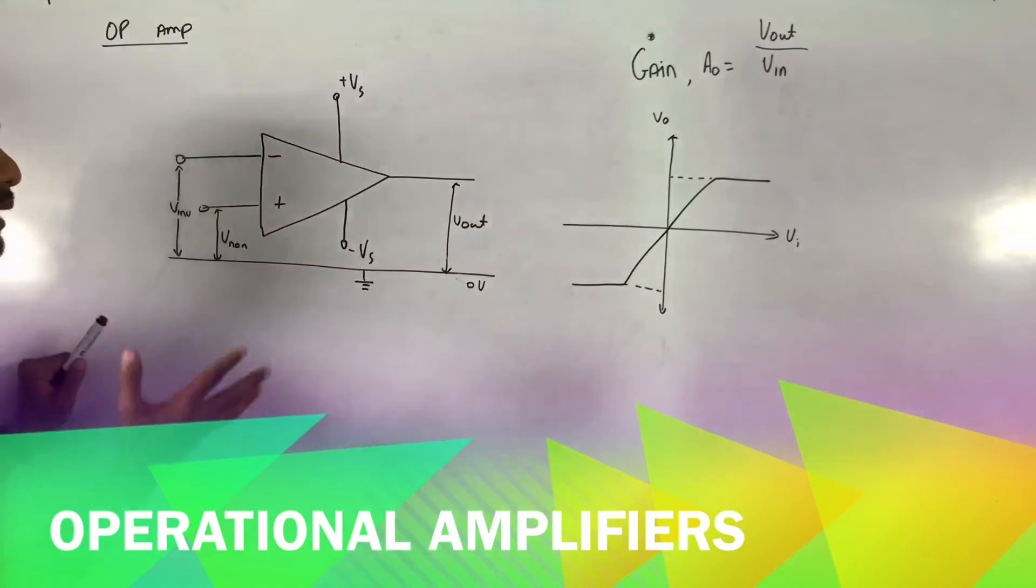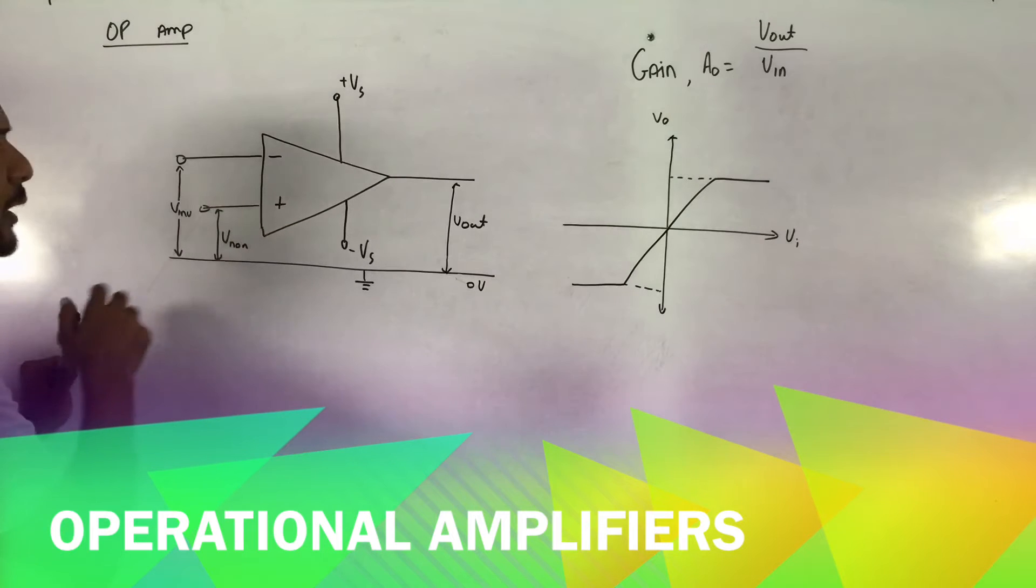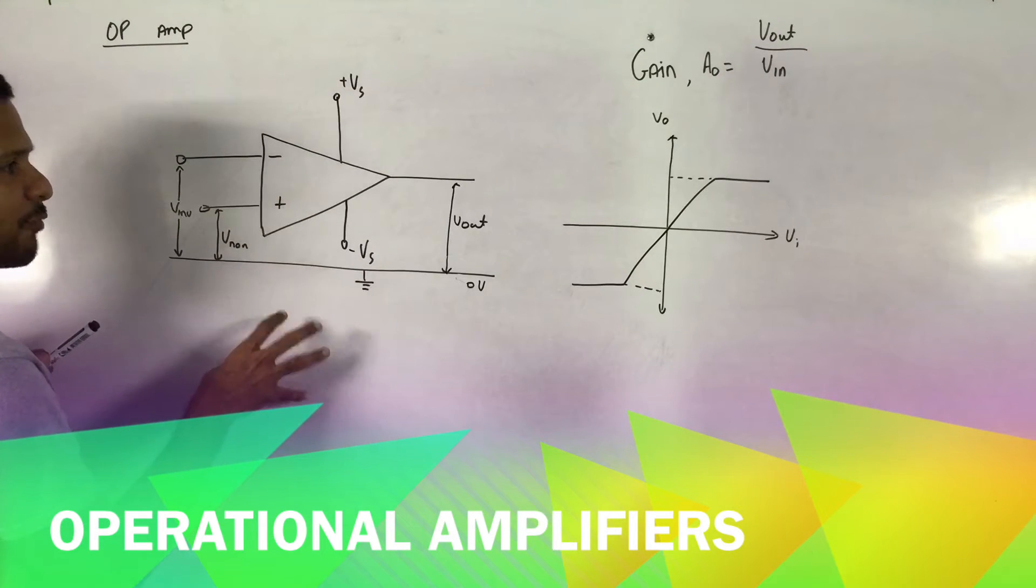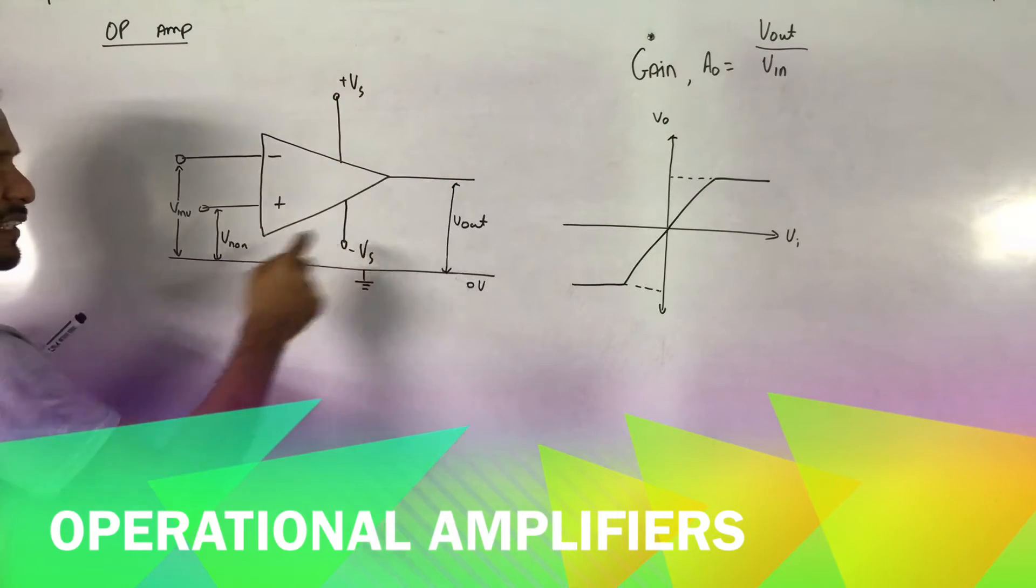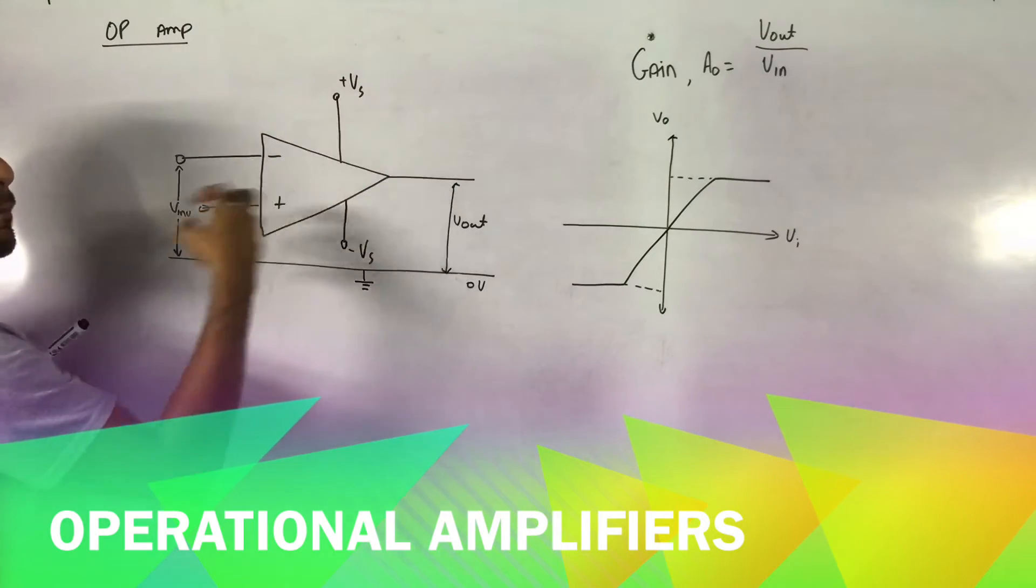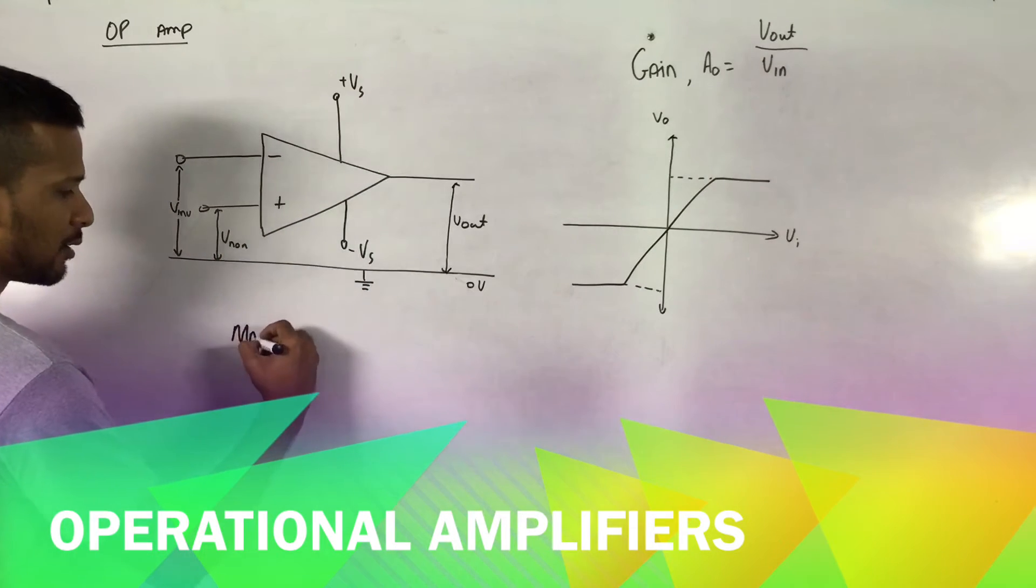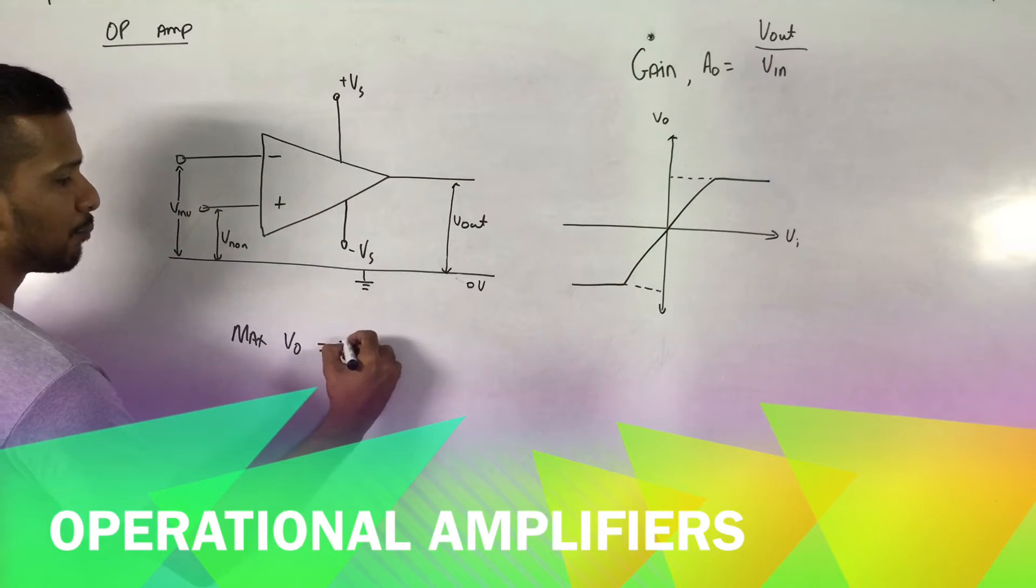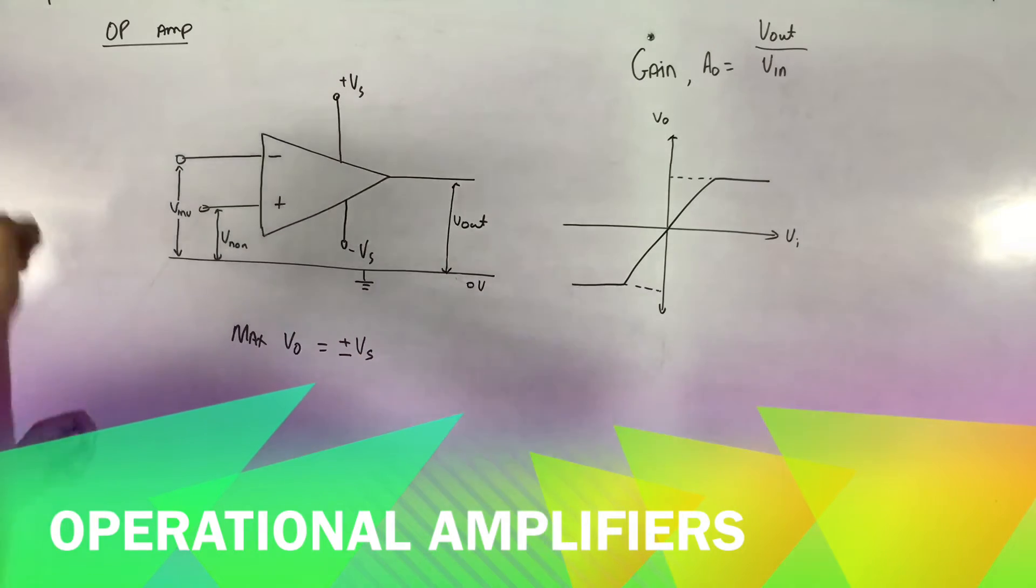This is a simple block diagram that you will see in many questions. This diagram shows the actual terminals of the op-amp. So the op-amp has a few main things. It has supply, it has a positive supply and negative supply. This represents the maximum the output could ever be. The maximum the output could ever be is plus Vs or the minimum is minus Vs.